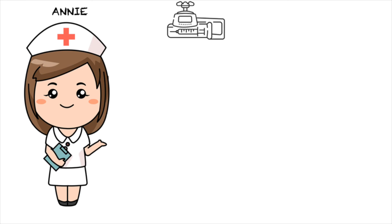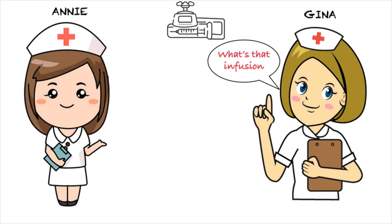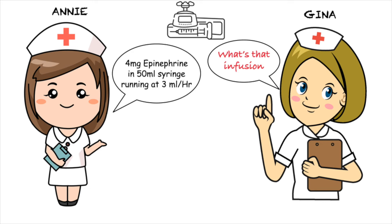Annie was taking care of our patient after he was shifted from the cardiac OR. Her work shift is over and she is about to leave. Gina turns up and takes charge of the patient. She has a quick look at the ventilator, the monitor, and the infusion pump. She asks Annie, what's that infusion? Annie says it's 4 mg of epinephrine in 50 ml of syringe running at a rate of 3 ml per hour.